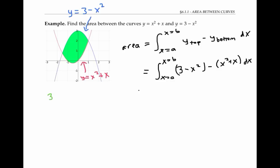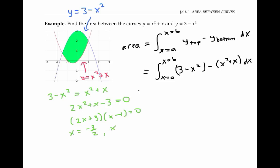To find exact values of a and b, we set the two equations equal to each other and solve for x. Setting three minus x squared equal to x squared plus x, and adding x squared to both sides gives 2x squared plus x minus three equals zero. This factors into (2x plus three)(x minus one), and therefore x equals negative three halves or x equals one — just like we thought from the graph. So our bounds of integration are from negative three halves to one.